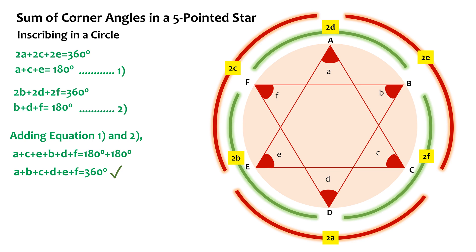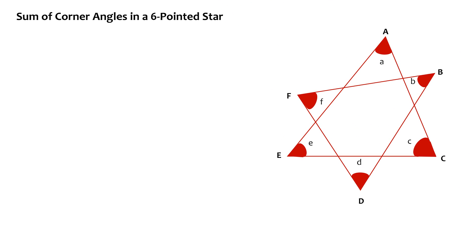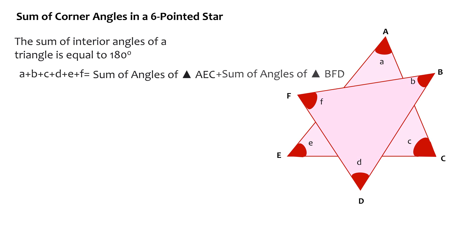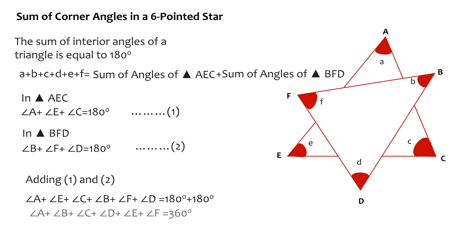Therefore, the sum of corner angles of a six-pointed star will be 360 degrees. In the case of an irregular six-pointed star, we can use the sum of interior angles of a triangle to find the sum. The sum of corner angles equals the sum of angles of triangle AEC plus the sum of angles of triangle BFD. Adding these two triangles gives the sum of corner angles of the six-pointed star as 360 degrees again.